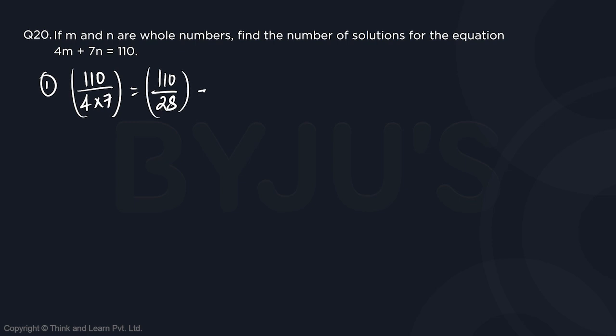So this is going to give us 110 upon 28. Now, 110 upon 28 is going to be more than 3.5. This is definitely not 4. So if I round it off, the 3.5, it will result in 4. So there are going to be 4 whole number solutions. This is one approach.